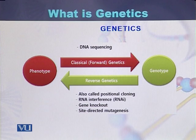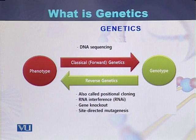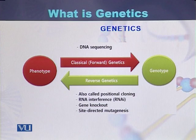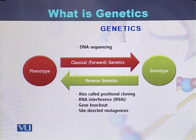Forward genetics is usually performed by sequencing the DNA. In reverse genetics, the phenotype is identified based on the genotype. There are different methodologies used for studying reverse genetics, including positional cloning, RNA interference, gene knockouts, and other methods used to study phenotype based on genotype.